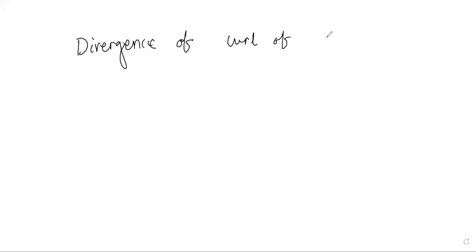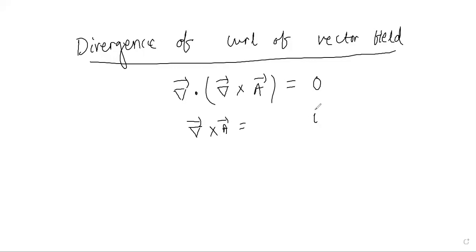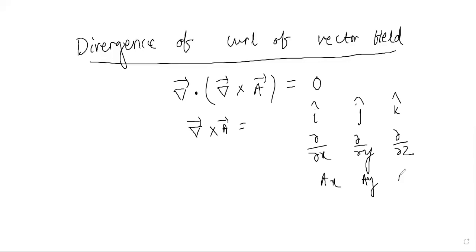Another property: the divergence of the curl of a vector field. Starting from the curl of vector A — that is del × A — we then take the divergence: del·(del × A). To find this, write del × A as a determinant with rows: (î, ĵ, k̂), (∂/∂x, ∂/∂y, ∂/∂z), and (Ax, Ay, Az).